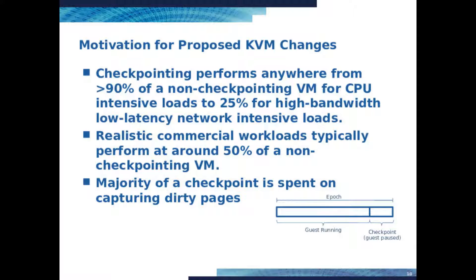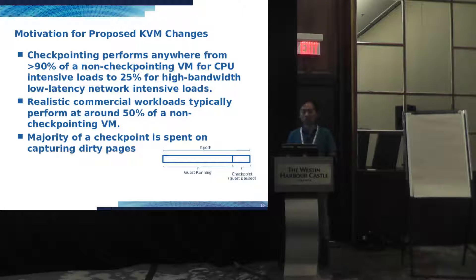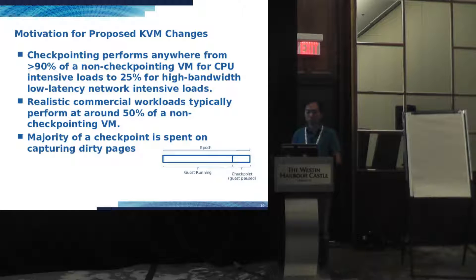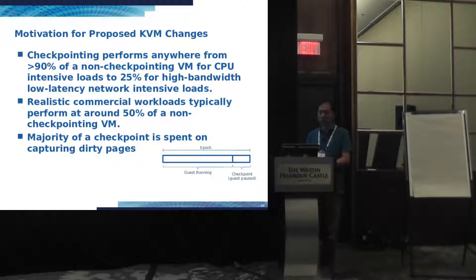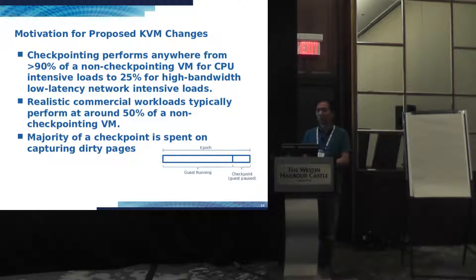So what's the motivation for the changes? A checkpointing system is all about performance. A traditional checkpointing solution where it periodically pauses the VM performs anywhere from over 90% compared to a non-checkpointing VM for CPU-intensive loads, to under 25% for high-bandwidth, low-latency, network-intensive loads. For commercial workloads, it typically performs around 50%. Those numbers were obtained from running Stratus Avance Software against benchmarks and realistic commercial applications on the latest Broadwell systems and Intel platforms.